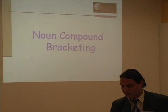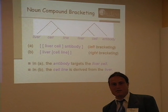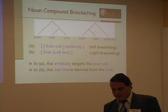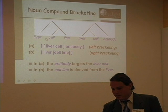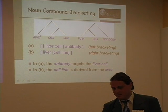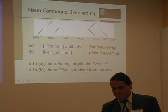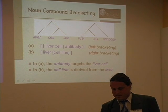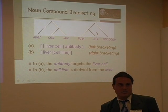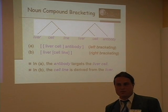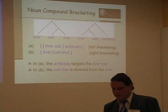The first task is noun compound bracketing. Consider three-word noun compounds like 'liver cell line' and 'liver cell antibody.' From a part-of-speech view, both are sequences of three nouns with the same first two words, but the syntactic structure differs. 'Liver cell antibody' is an antibody targeting the liver cell — left bracketing — while 'liver cell line' is a cell line derived from the liver — right bracketing. To find the semantics of the noun compound, you need to solve this bracketing problem first.